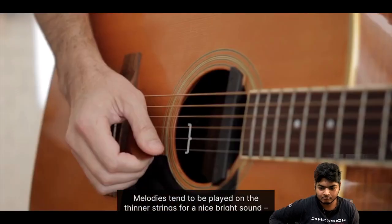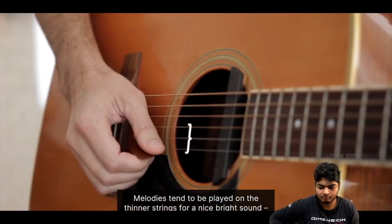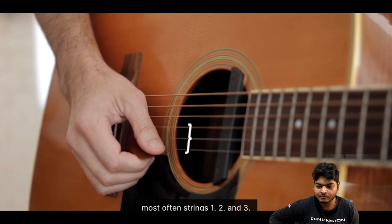Melodies tend to be played on the thinner strings for a nice bright sound, most often strings 1, 2 and 3.